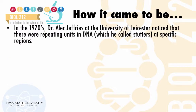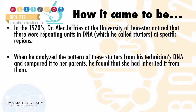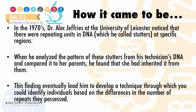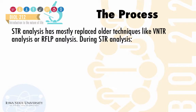The person who invented DNA fingerprinting is Dr. Alec Jeffries at the University of Leicester, who in the 1970s noticed that there were repeating units in DNA, which he called stutters, at specific regions. These stutters were later called variable number tandem repeats, or VNTRs. When he analyzed the pattern of these stutters from his technician's DNA and compared it to that from her parents, he found that she had inherited the stutters from them. This finding eventually led him to develop a technique to identify individuals based on differences in the number of repeats they possessed. Currently, STR analysis has mostly replaced older techniques like VNTR analysis or RFLP analysis.